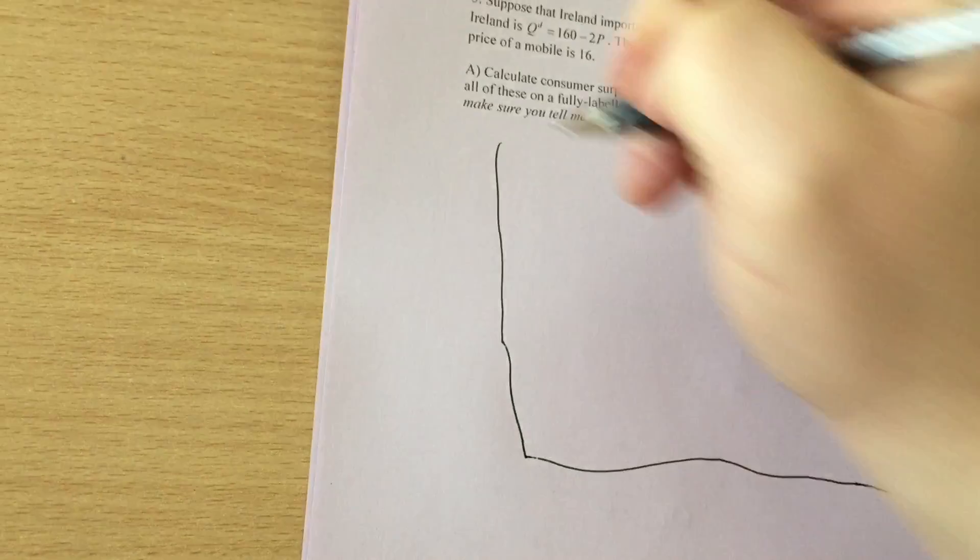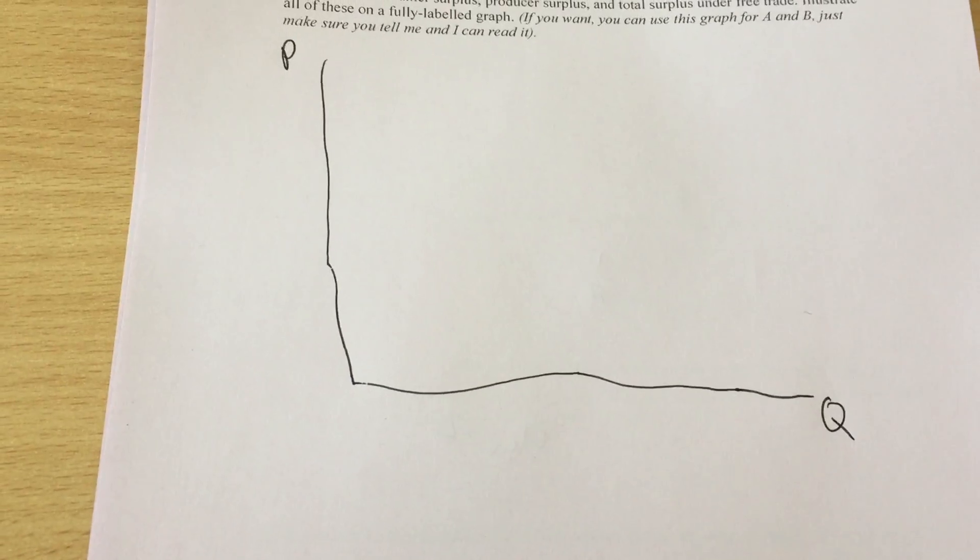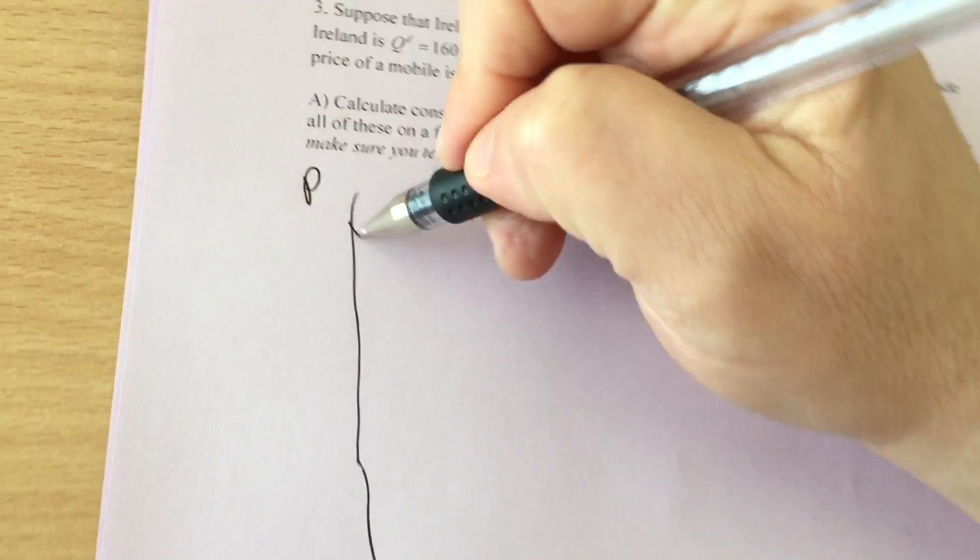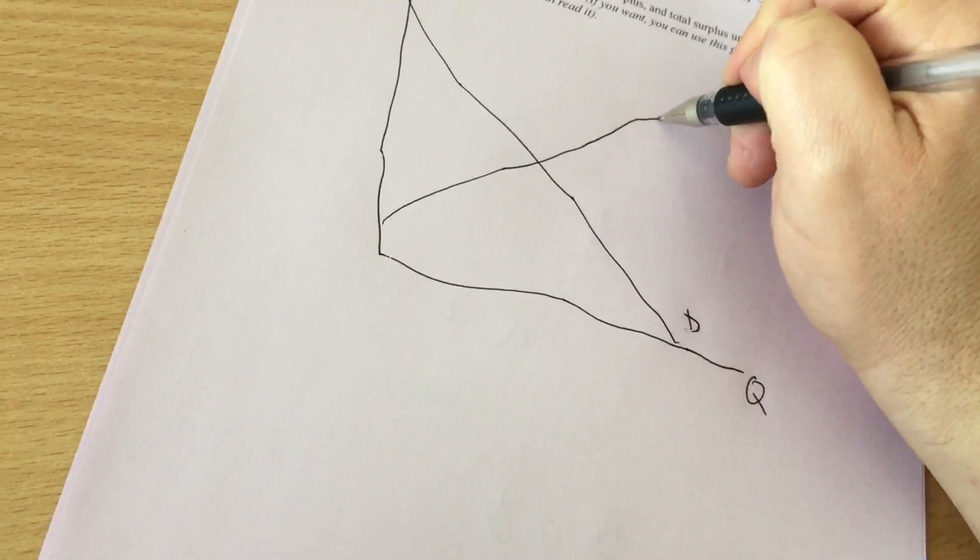So let's draw a graph. Make sure you get price and quantity on there. Make sure you label your axes correctly. Our demand curve slopes down. Our supply curve slopes up.